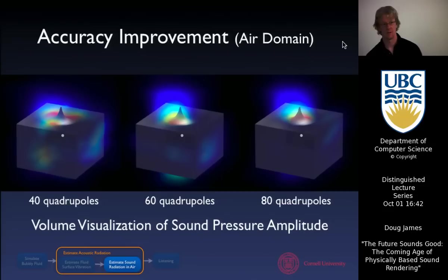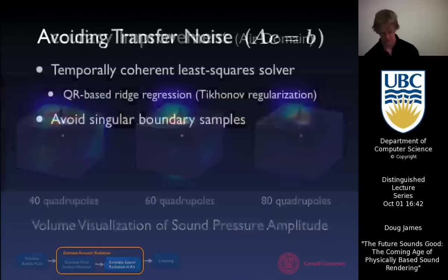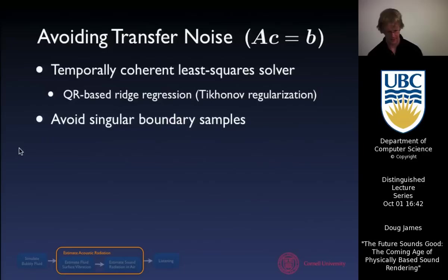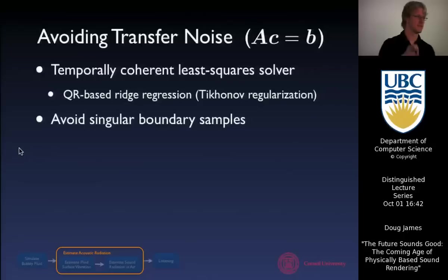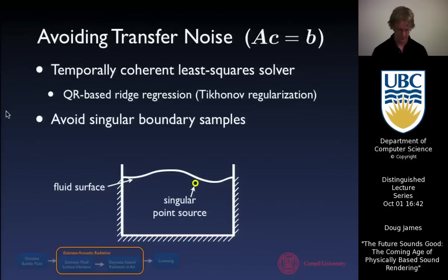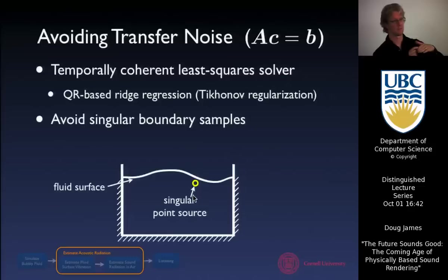One issue in practice is that because these least-squares problems are very ill-posed and the geometry is changing over time, you have to worry about regularization so you don't get popping noise and other noise artifacts. We use a particular method that can be made temporally coherent, unlike truncated SVD. Another issue is that as the bubble goes to the boundary, we have a singularity — essentially going to the boundary of our boundary integral equation — and that can be a problem.